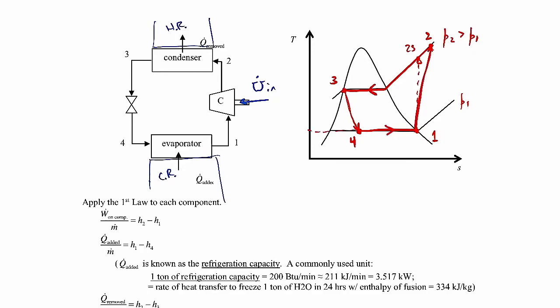The temperature of the working fluid in the evaporator — that's the temperature at states four and one — needs to be a little bit less than the temperature inside the refrigerated space to get good heat transfer. So the cold reservoir temperature has to be somewhat higher than the evaporator temperature. The temperature in the condenser, along the path from state two to state three, needs to be higher than the hot reservoir temperature so we get heat transfer out to the environment.